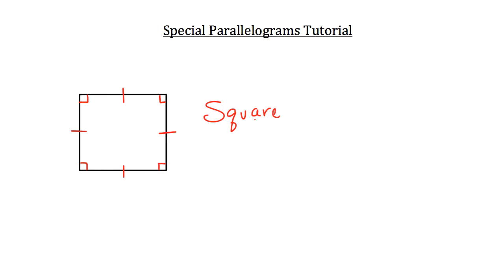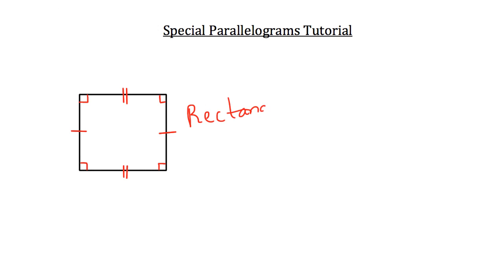Let's try one last one. We'll begin with our parallelogram and add in some important information. Given what you see here, what kind of figure do you think it is? This would be a rectangle. It's a rectangle because all four interior angles are 90 degrees. However, the opposite sides are congruent to each other — all four sides aren't congruent. Only the opposite sides are congruent, and that is a characteristic solely of the rectangle. So those are the three special parallelograms you should be aware of: rectangles, rhombuses, and squares.